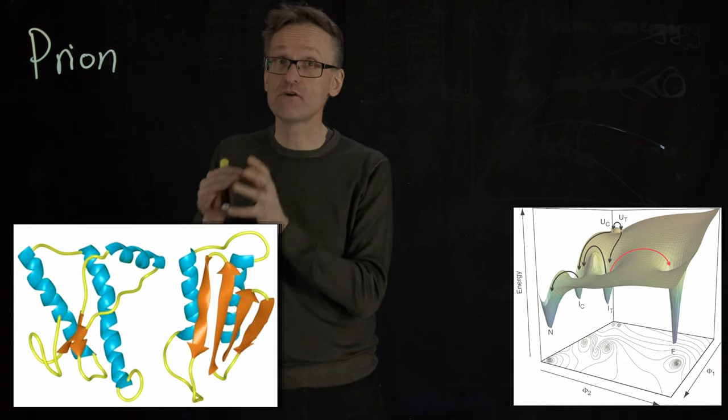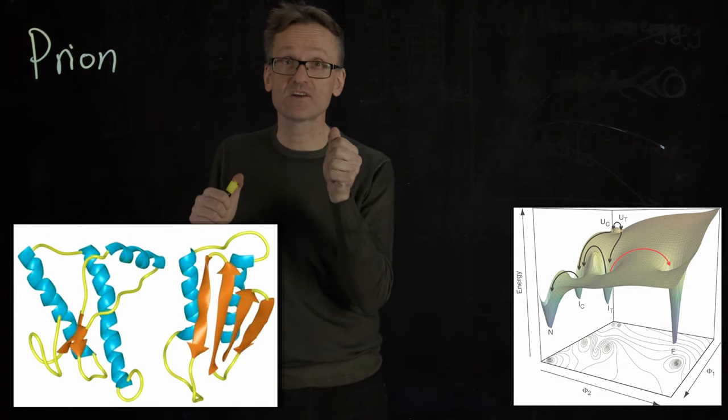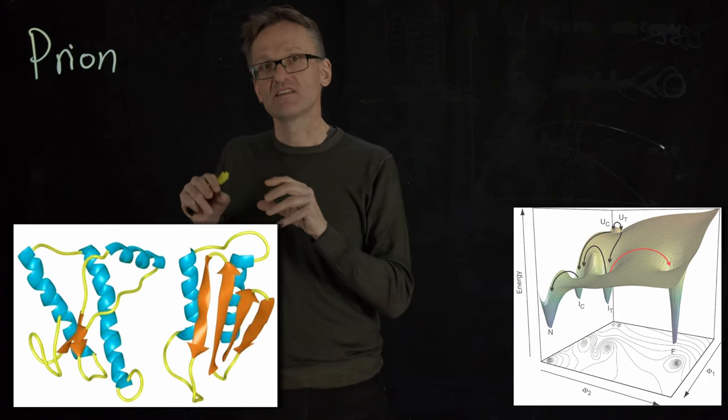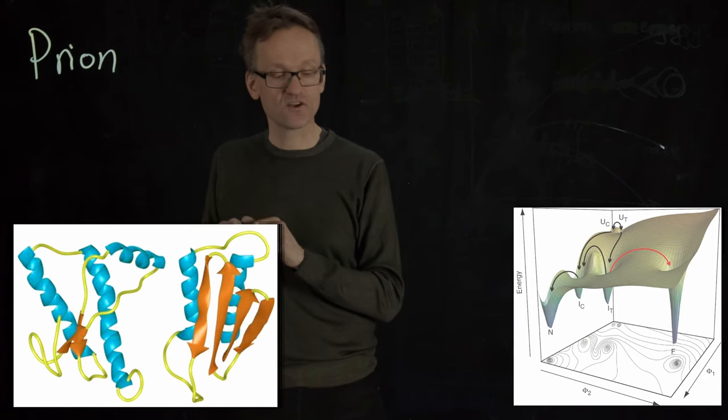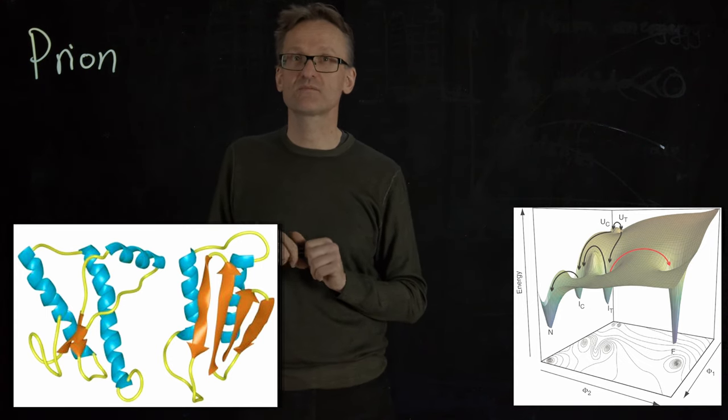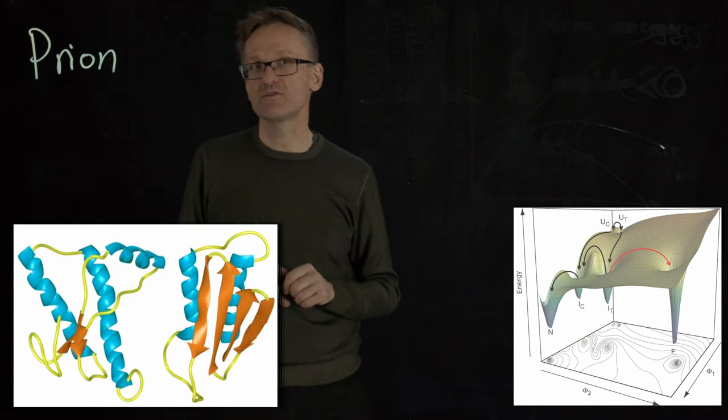This is a very stable beta sheet. Remember how I said about beta sheet formation times? It can take forever. This is so stable that even the normal enzymes we have to digest proteins, or something, can't break this apart. And that will lead to some scary things.